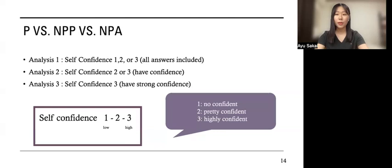I analyzed in three ways to increase the accuracy by eliminating answers that were correct by chance. In analysis 1, all answers were included, which is self-confidence 1, 2, and 3. In analysis 2, answers which participants had confidence—in other words, self-confidence 2 and 3—were used. In analysis 3, only self-confidence 3, which are answers that participants had strong confidence, was used to analyze.